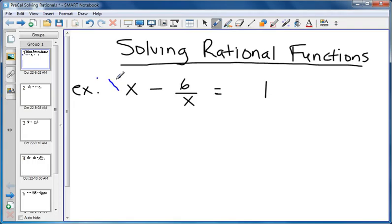So I multiply every piece, make sure you do it for every piece, by x. So that gives me x squared, here the x's cancel, leaving just 6, and over on this side I get x.